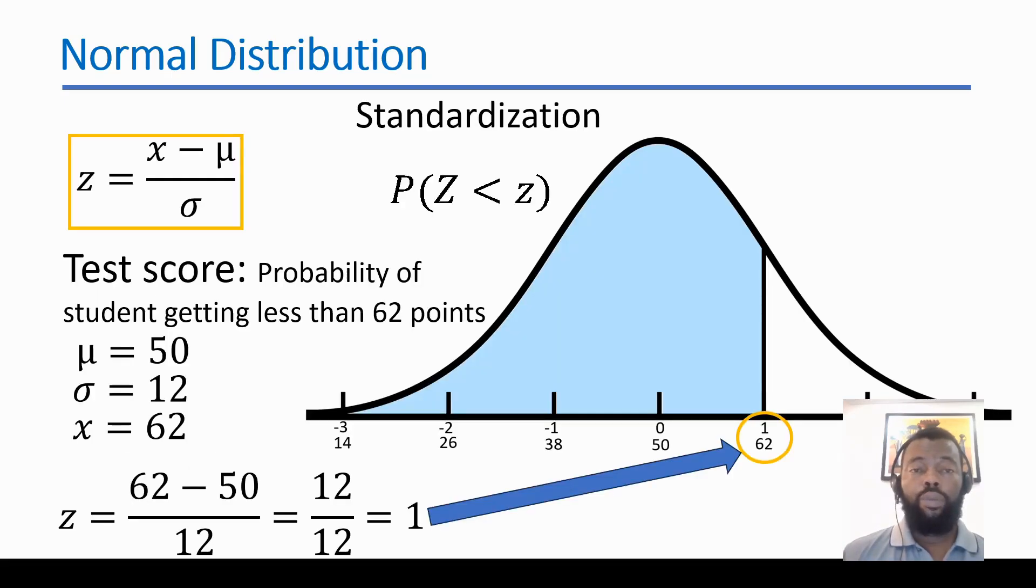Let's have an example. We have a test with scores that range from 0 to 100. What is the probability of students getting less than 62 points? These data are not standardized. We have 50 as the mean, 12 for standard deviation, and we have 62 as our limit. So we need data in the left side. When we apply this data to the formula, we find that 62 corresponds to one standard deviation in standardized normal distribution. Our area would be all the left side area until 1.